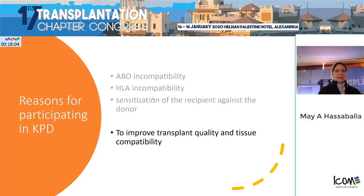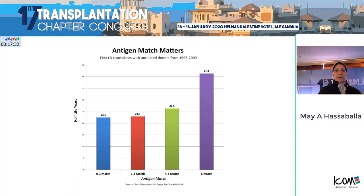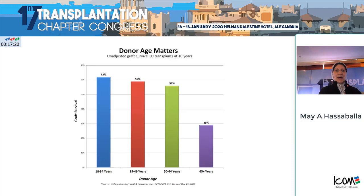Another group of patients who come to KPD programs are compatible patients who wish to improve the quality of their transplants. For instance, a relatively young patient with an older donor — like a mother wanting to donate to her son — who hope to find a younger match. Or non-sensitized patients who have HLA mismatches and need to improve quality by increasing the number of matches shared with the donor. Antigen match matters: the half-life for a six-antigen match is 41.4 years, compared to 22.6 to 26.5 years for lesser antigen matches. Donor age also matters — those 65 years and older have a 10-year survival of 29%, compared to 56–62% for younger age groups.